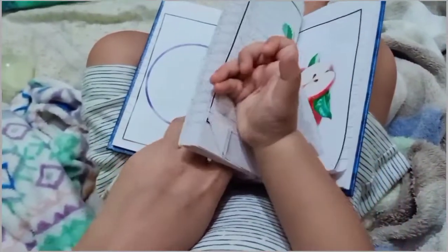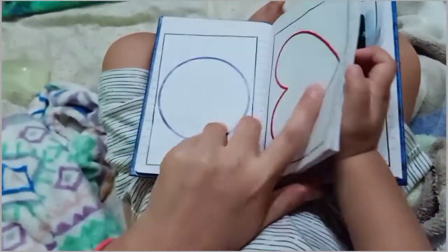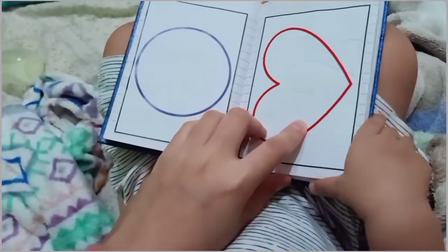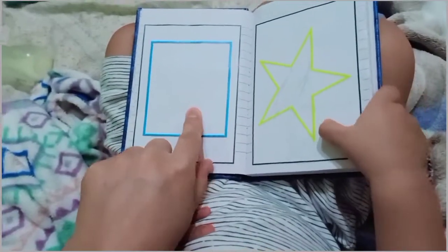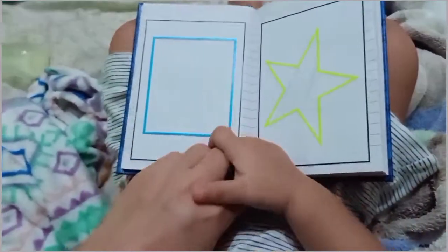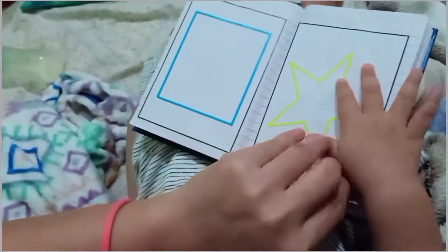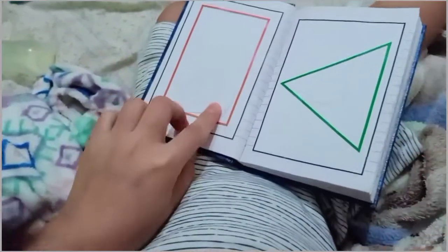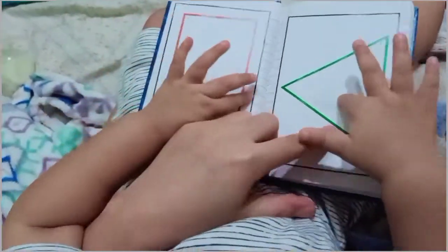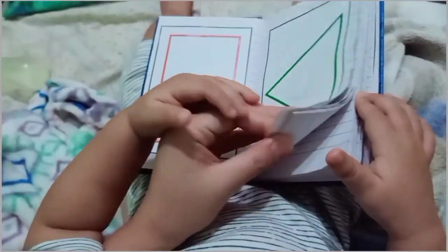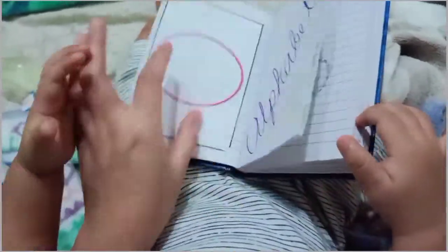This is not oval, this is circle. Wait, okay. This one, what is this? Heart. Okay. What about this? What shape is this? Square. Square. This one? Star. And what about this one? Square? Rectangle. This one? Triangle. Triangle. Very good.